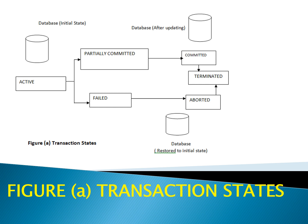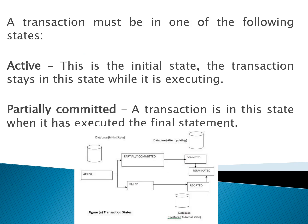The transaction states are: active state, partially committed state, failed state, committed state, terminated state, and aborted state. A transaction must be in one of these states. Initially, the active state is the initial state — the transaction is in this state while it is executing. When it is executing, it will be present in the active state.